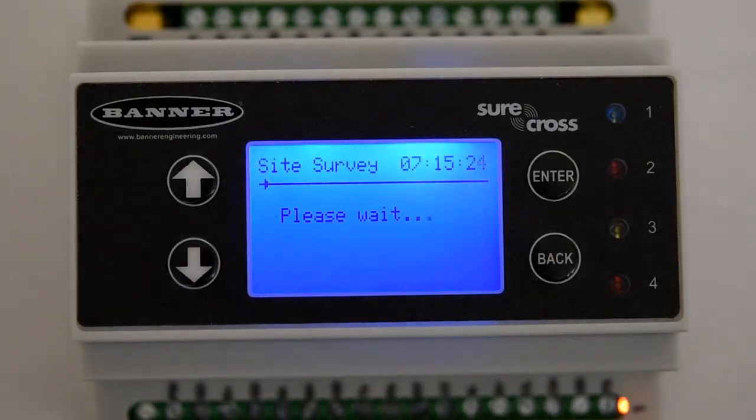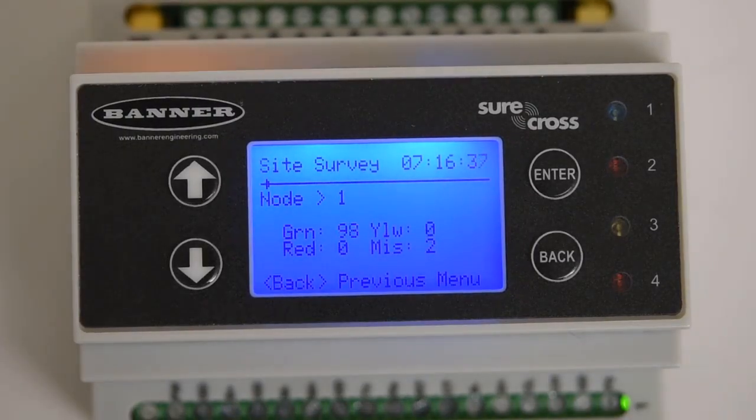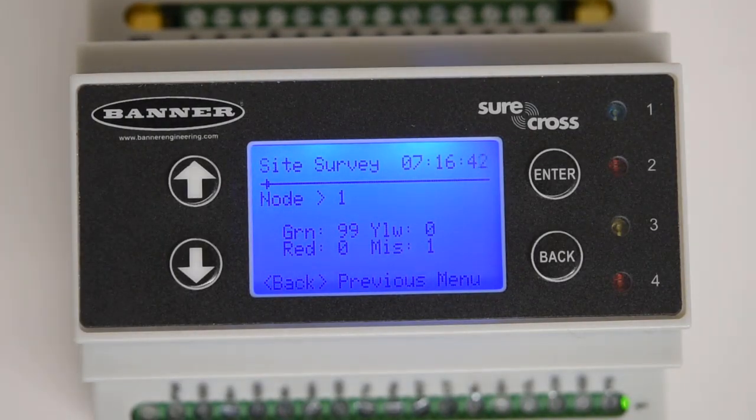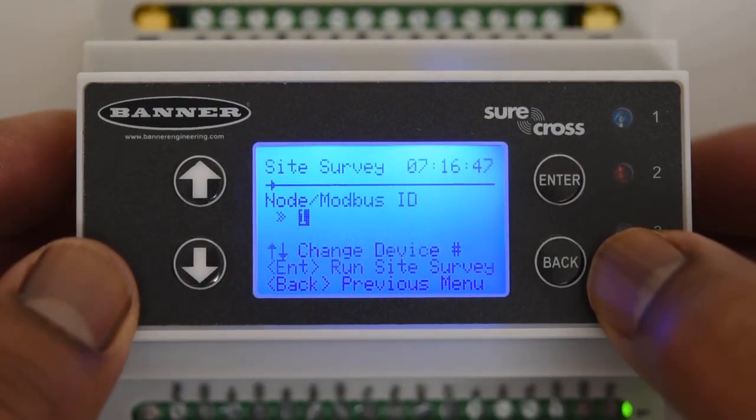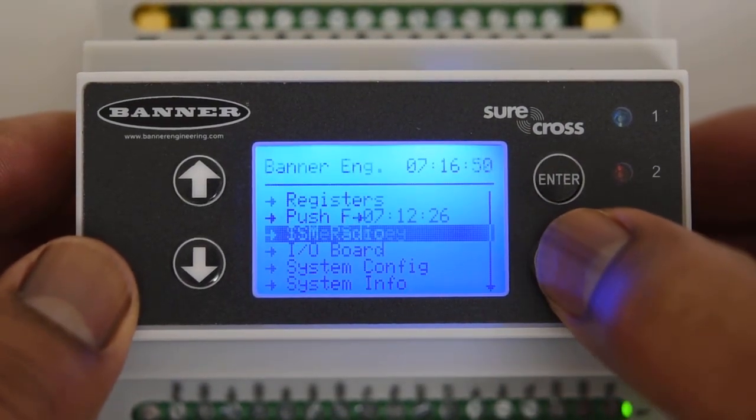The system will send out 100 signals. Then show the strength of each signal. Once this is done, make sure you back out of the site survey mode by clicking the back button.